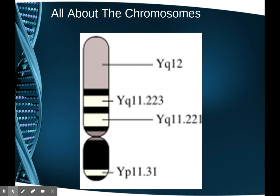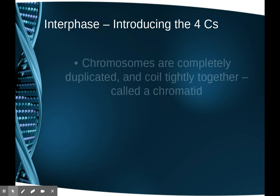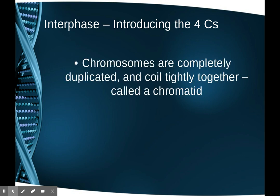Chromosomes are long strands of DNA broken into bands or sections. Each section is called a gene and controls one or more traits. There are four words that start with the letter C that we need to keep straight. Chromosomes are the first: all the chromosomes inside the nucleus of a cell have to make a copy of themselves.